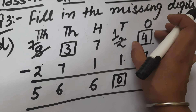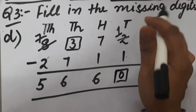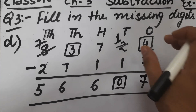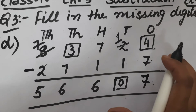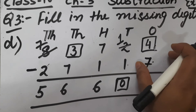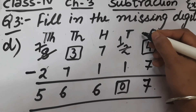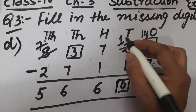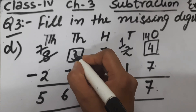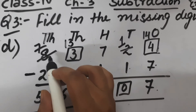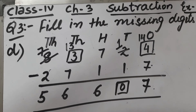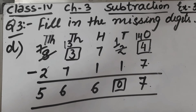7 minus 2 is 5. We have to find the remaining missing digit. Since 7 plus 6 is 13, this 3 is actually 13 and the next digit is decreased by 1, becoming 7. This is how we solve question number 3 of Exercise 3.5. Thank you.